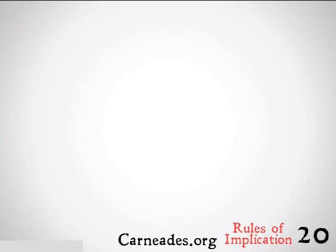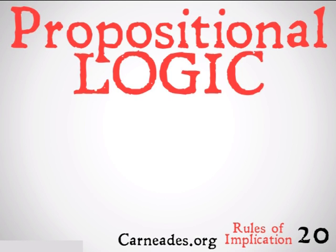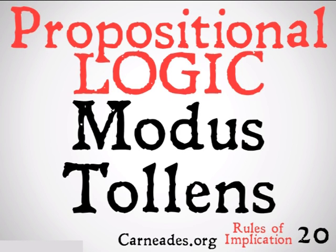Welcome back to 100 Days of Logic with 90-Second Philosophy and Carnetis.org. Today we're going to be continuing with propositional logic, looking at the rules of implication, looking at something that is the opposite of modus ponens, called modus tollens. Let's take a look at some examples.